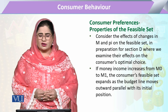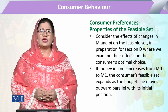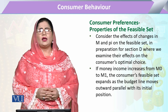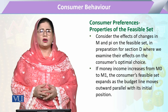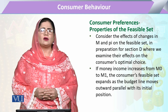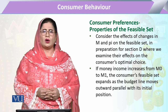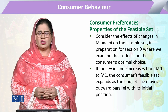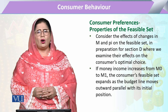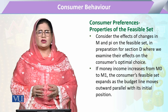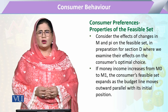Considering the effects of changes in M (money income) and prices on the feasible set: the feasible set relates to consumer opportunities, which depend on money in the consumer's pocket and the prices of commodities. When prices change, the consumer responds through changes in quantity or the consumption bundle, forming various combinations that represent the available opportunities to the consumer.